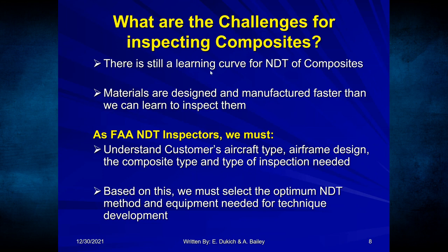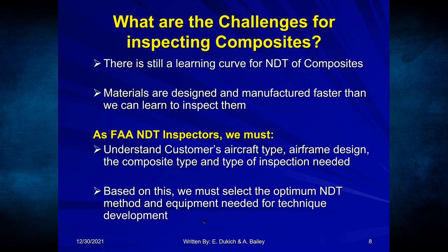I remember inspecting one of these aircraft made from hybrid boron where strings of layers were hanging from the wing and I didn't know what it was at the time. As an NDT person, I had to figure out a good technique to find the delaminations and damage to the aircraft wing. We in NDT still have a learning curve for composites — we have to ask manufacturers what materials are used, because they're designing and manufacturing faster than we can learn techniques to inspect them. As FAA NDT inspectors, we have to understand the aircraft type, airframe design, composite type, and type of inspection needed.